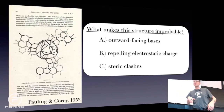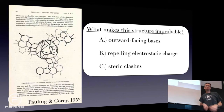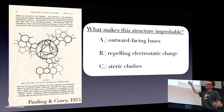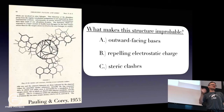The problem with Pauling's structure is that you would have electrostatic charges — those phosphates are negatively charged. So you're going to take lots of negative charges and put them right next to each other, which is going to be bad. There are also going to be steric clashes where atoms would bump into each other if you try to build a model of this.